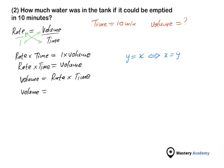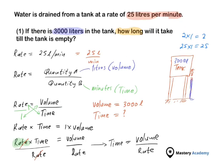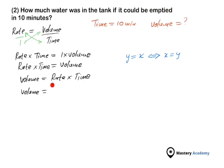Now we substitute: the rate is 25 liters per minute and the time is 10 minutes. Volume equals 25 liters per minute times 10 minutes, which gives 250 liters. The answer is in liters because volume is measured in liters. In words: for the tank to be emptied in 10 minutes, there must have been 250 liters of water in the tank.